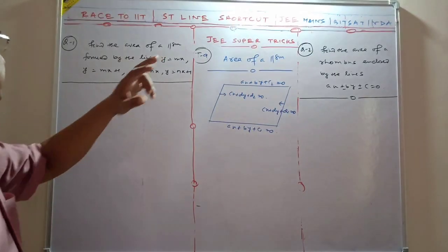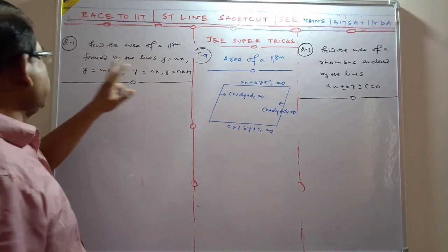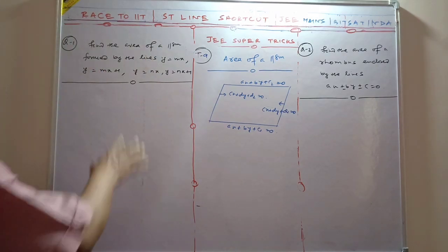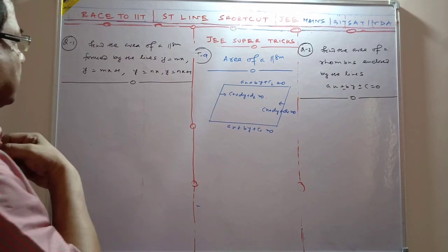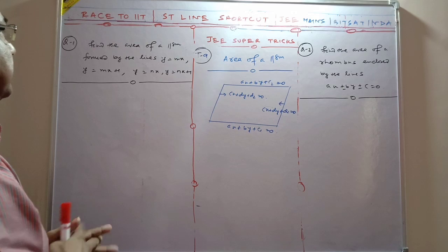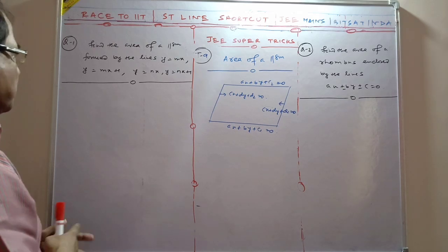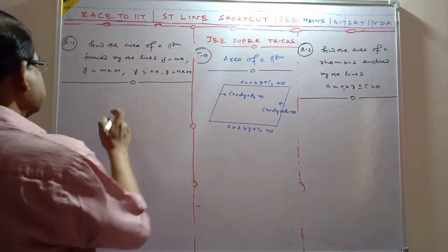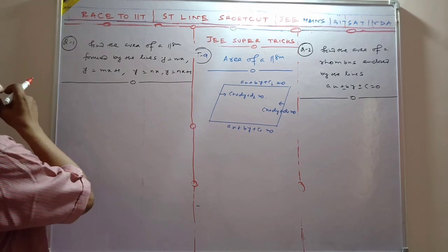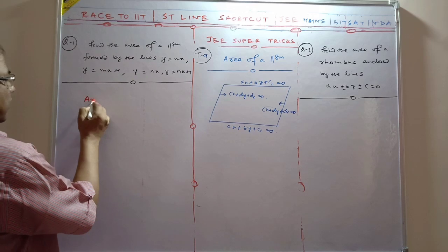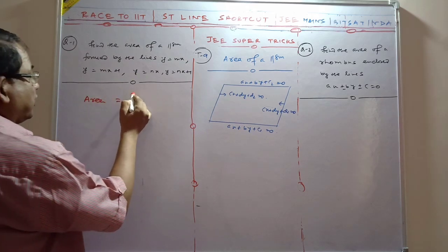When you find the area of the parallelogram formed by the lines y equals mx, y equals mx plus 1, y equals nx, and y equals nx plus 1, you can find this area if you know the trick.